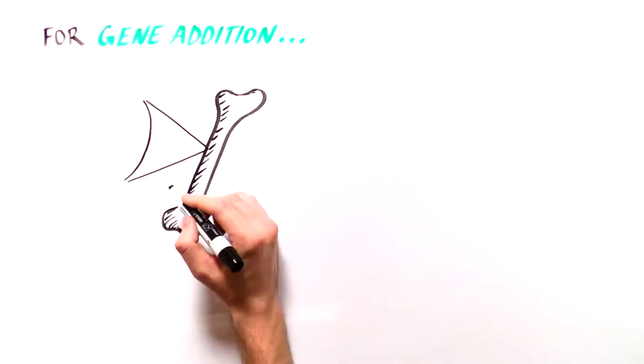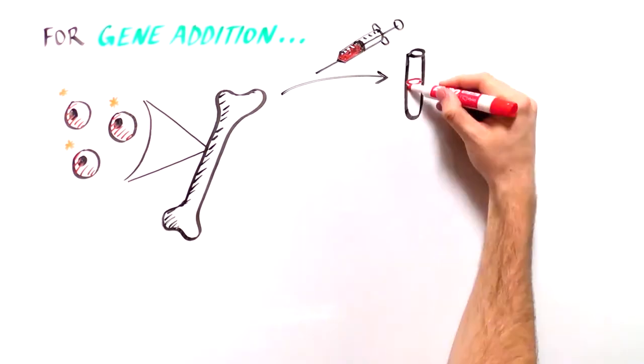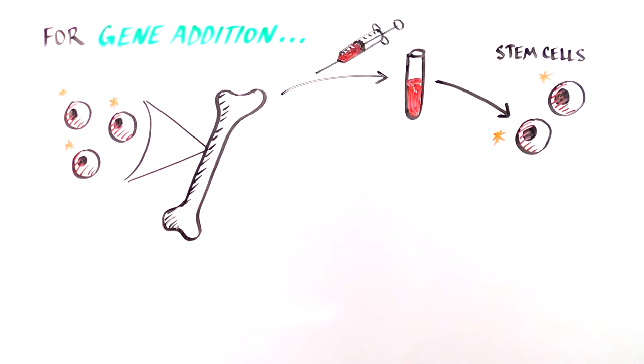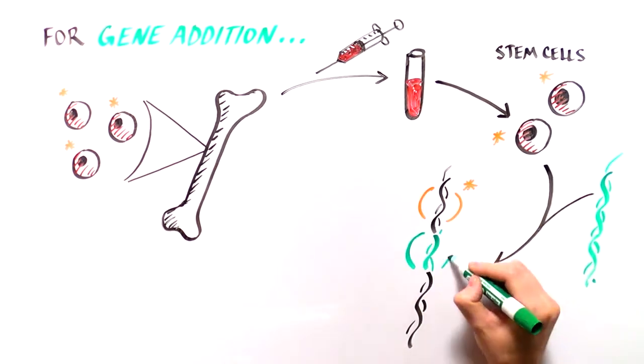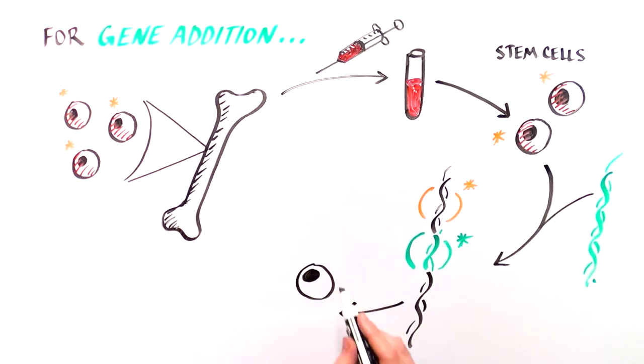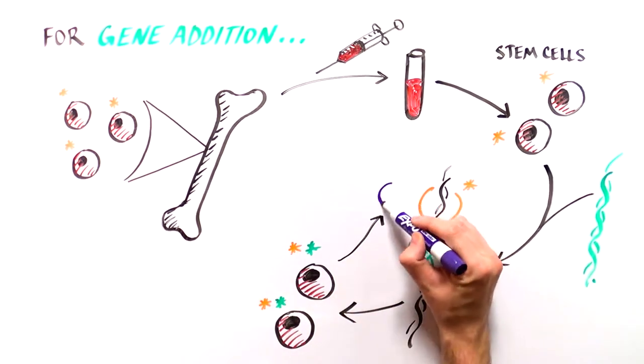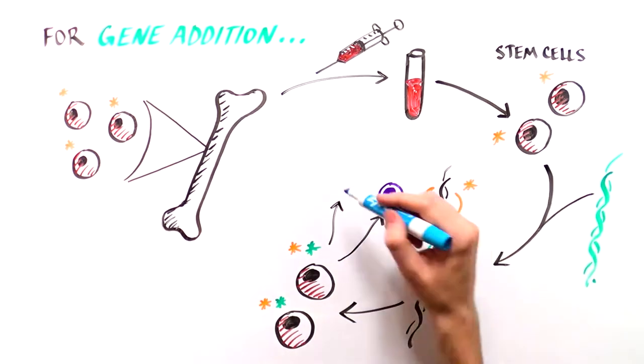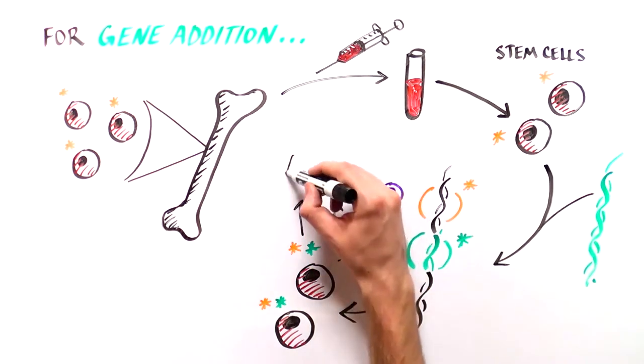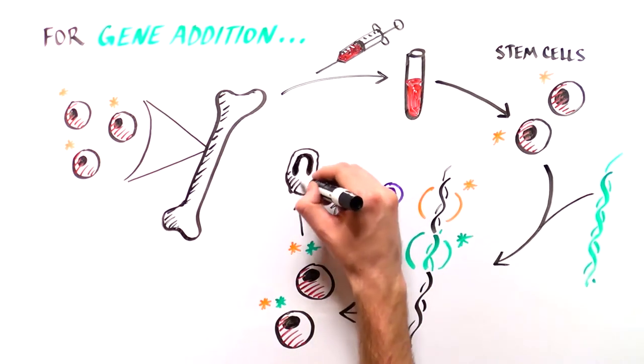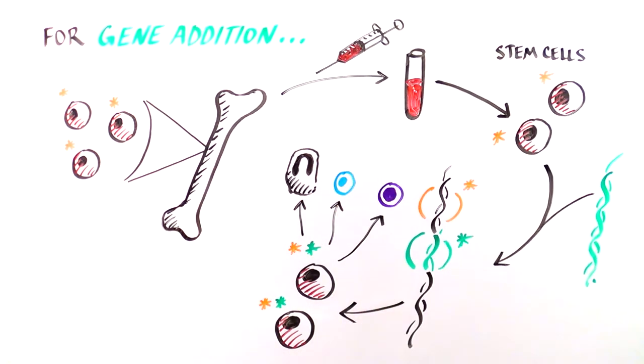First, bone marrow from SCID patients is removed and the stem cells are purified. Then, researchers make a piece of DNA that has the correct non-mutated DNA sequence in the gene that needs fixing. They then insert this normal DNA into the HSCs from SCID patients. With the normal version of the gene, the stem cells and the specialized immune cells they produce will all have a normal copy of the gene and will make normal proteins.